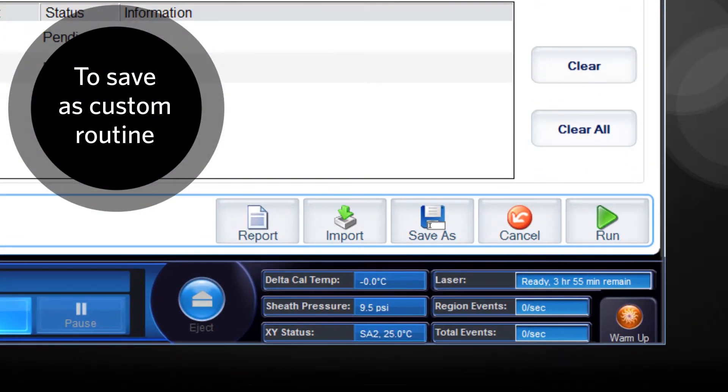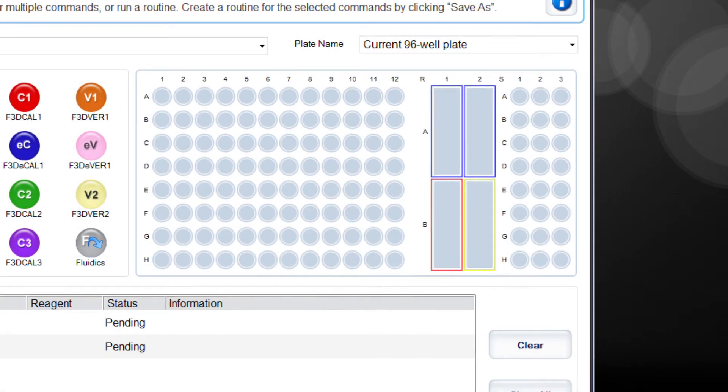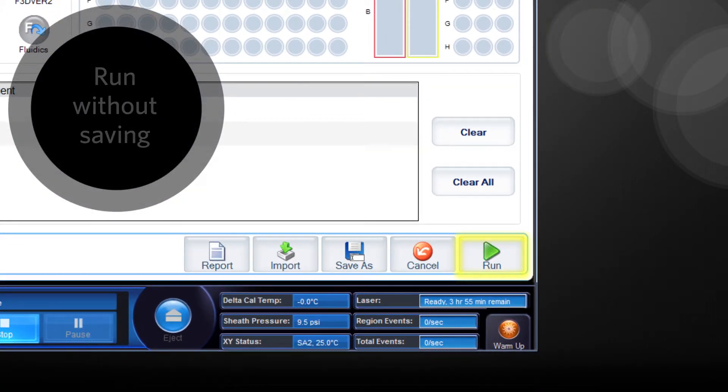The routine can be saved as a custom routine by clicking the Save As button and typing in a routine name, or can be run without saving by clicking the Run button.